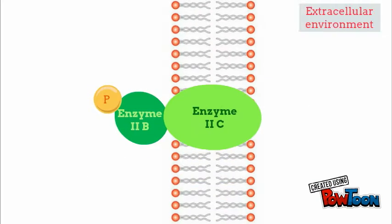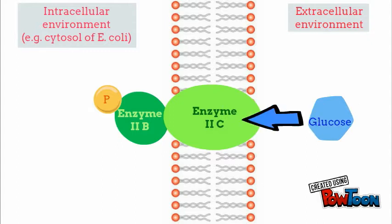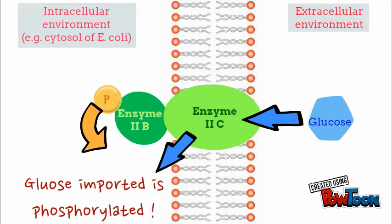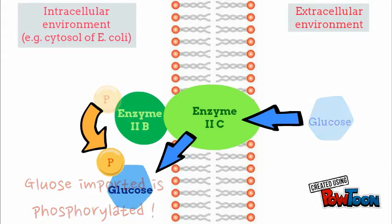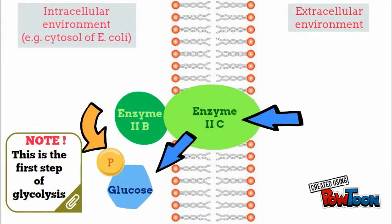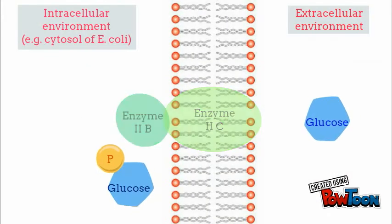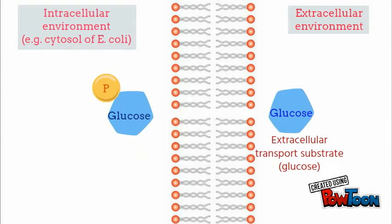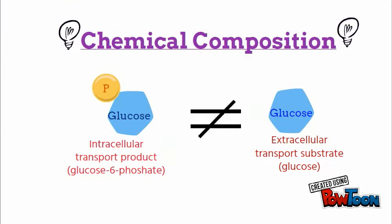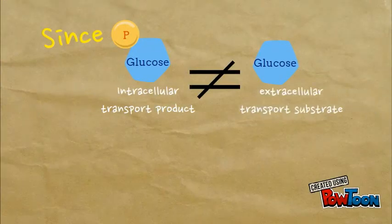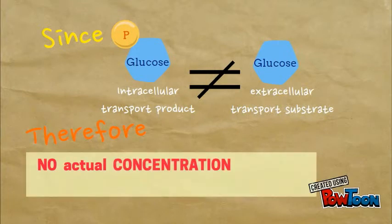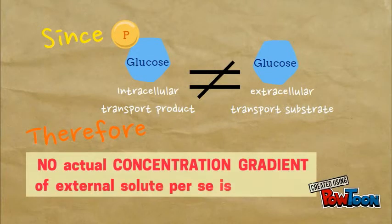In E. coli, glucose is phosphorylated to glucose-6-phosphate during group translocation, and note that this is the first step of glycolysis. Glucose-6-phosphate is the intracellular transport product while the glucose molecule is the extracellular transport substrate. Since the product appearing inside the cell is chemically different from the external substrate, no actual concentration gradient of the external solute is produced.